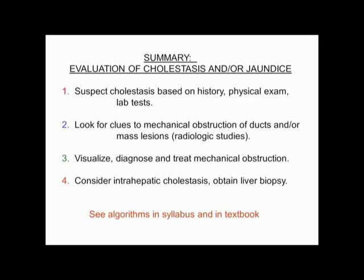In summary, for evaluation of cholestasis or jaundice: suspect cholestasis based on history, physical exam, and lab tests; look for clues to mechanical obstruction and mass lesions; visualize, diagnose, and treat mechanical obstruction; and for intrahepatic cholestasis, we often need a liver biopsy. Cross-sectional imaging including MRI can also help visualize the bile ducts.